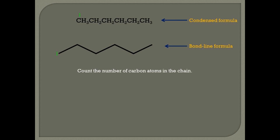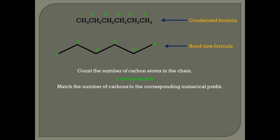Starting from either side, I count 1, 2, 3, 4, 5, 6. Six carbon atoms — I'm going to match that with a prefix that corresponds to the number six, and that prefix is hex. Since this is an alkane, the ending is A-N-E. I take that ending and combine it with the prefix hex to get hexane as my molecular name. Therefore, this molecule is hexane.